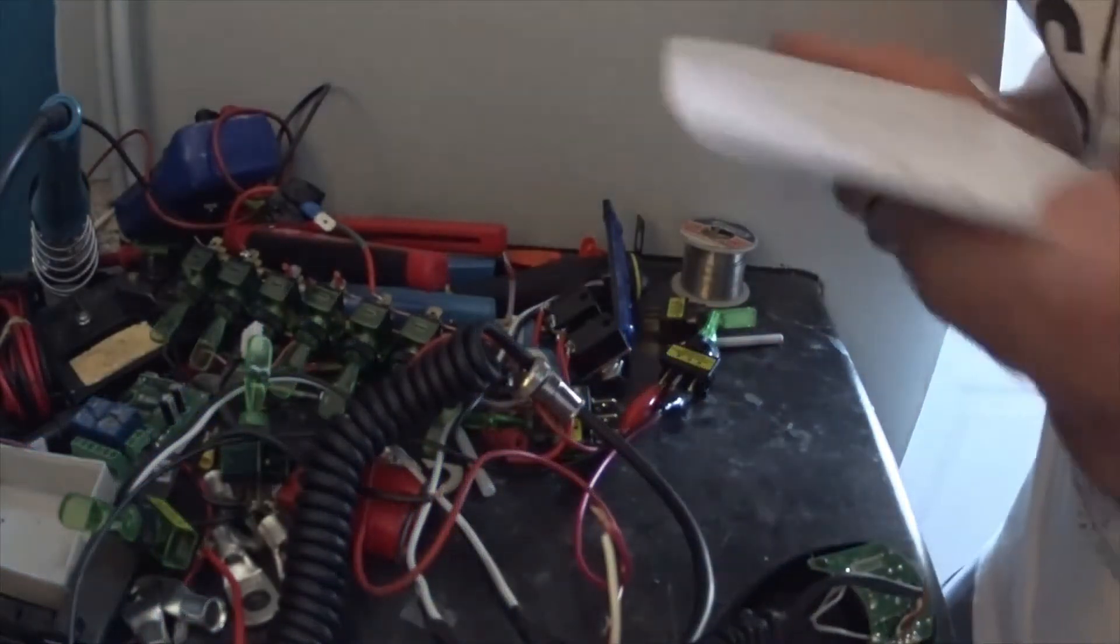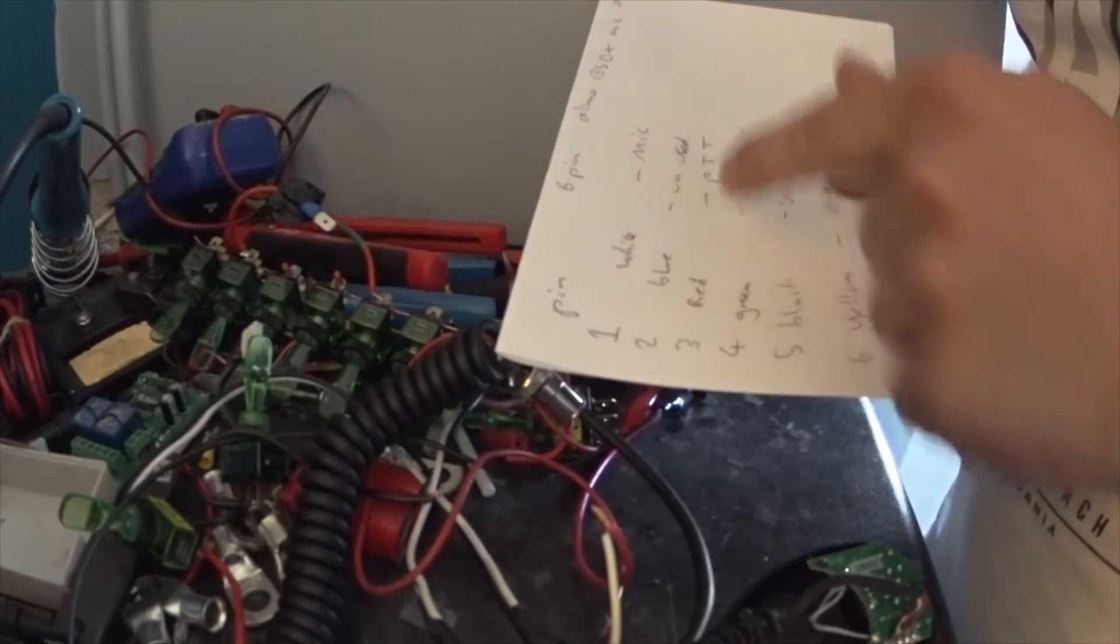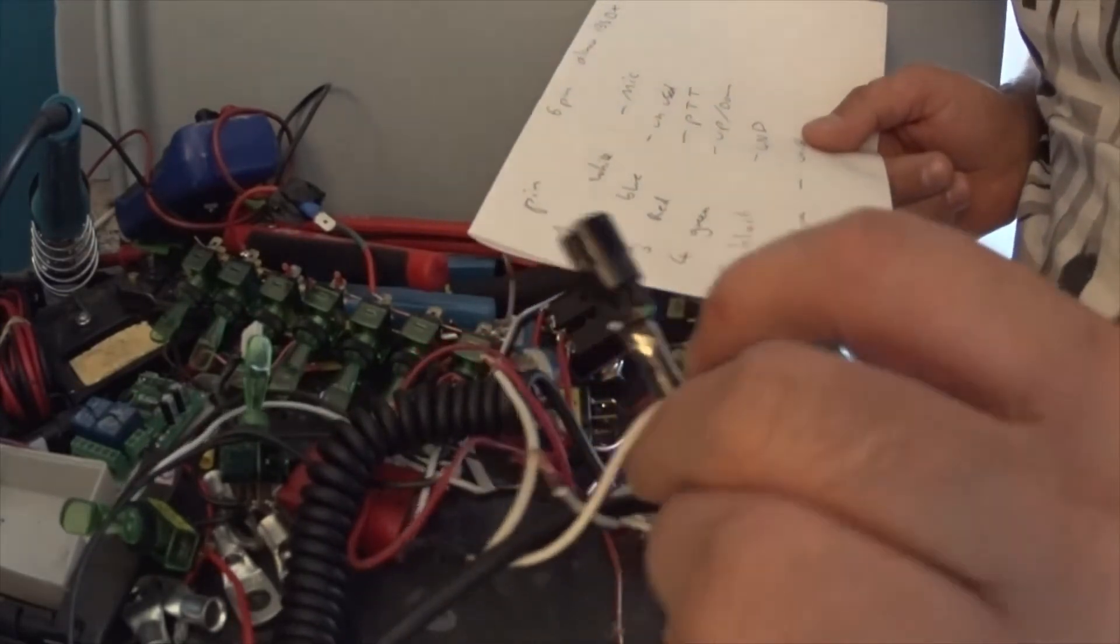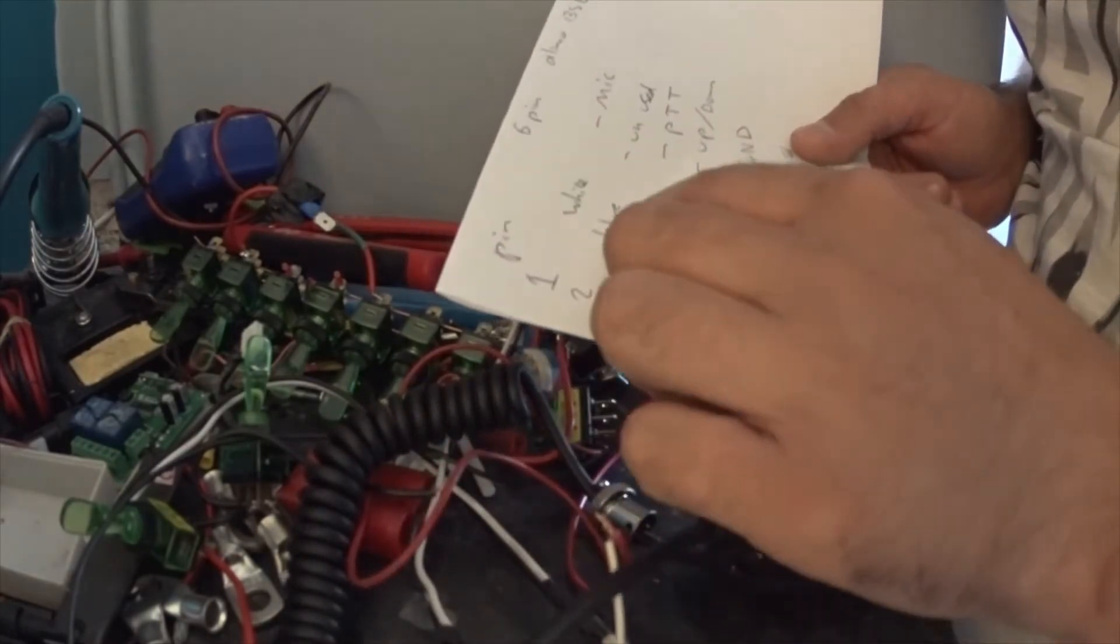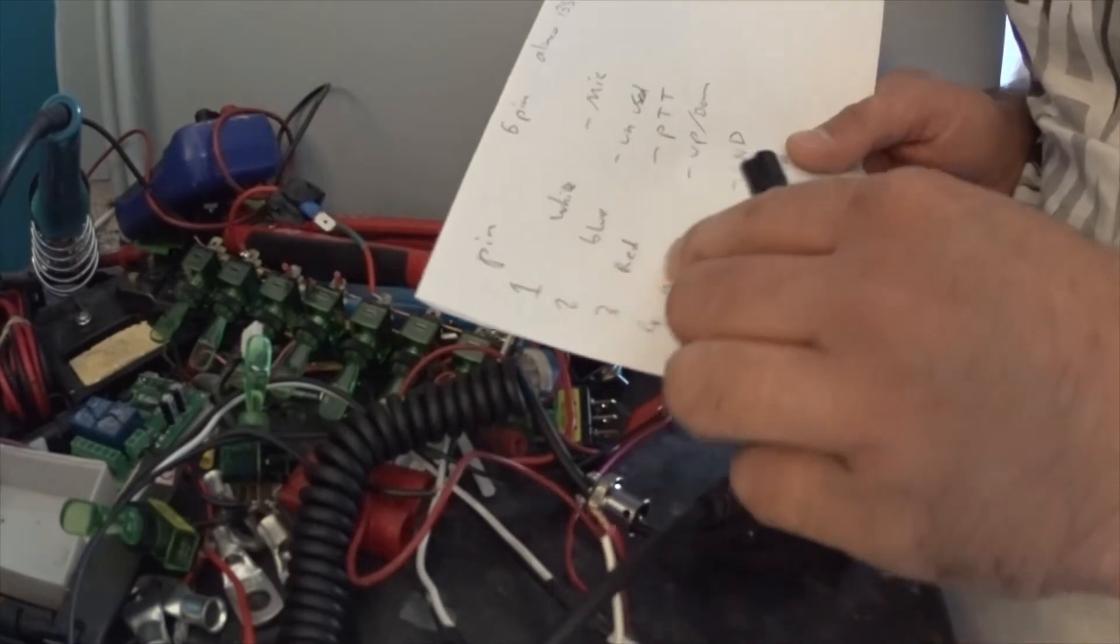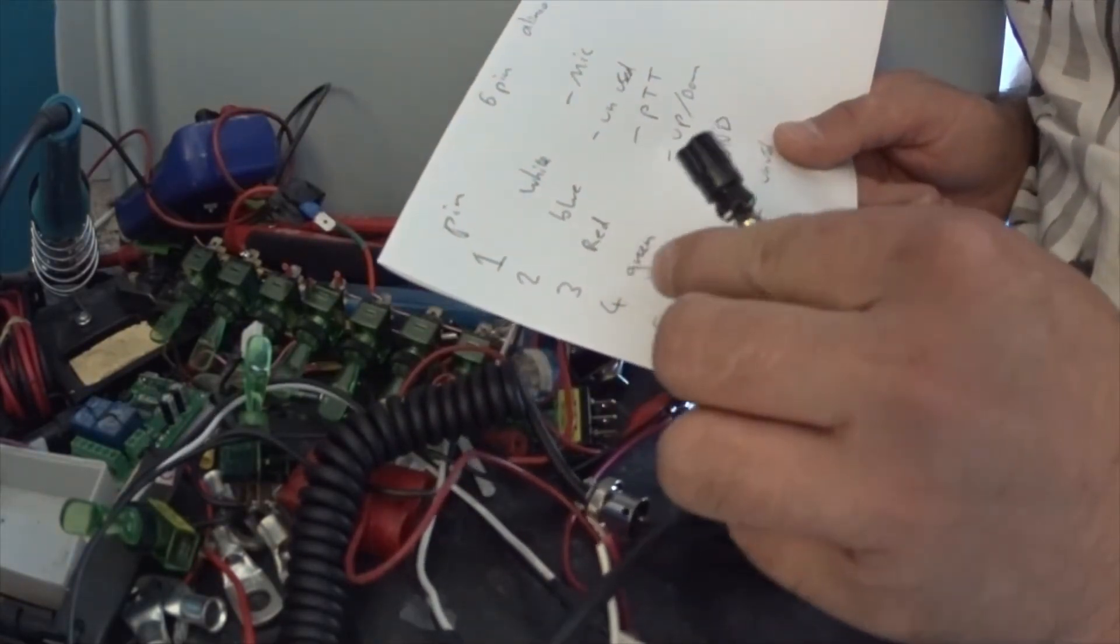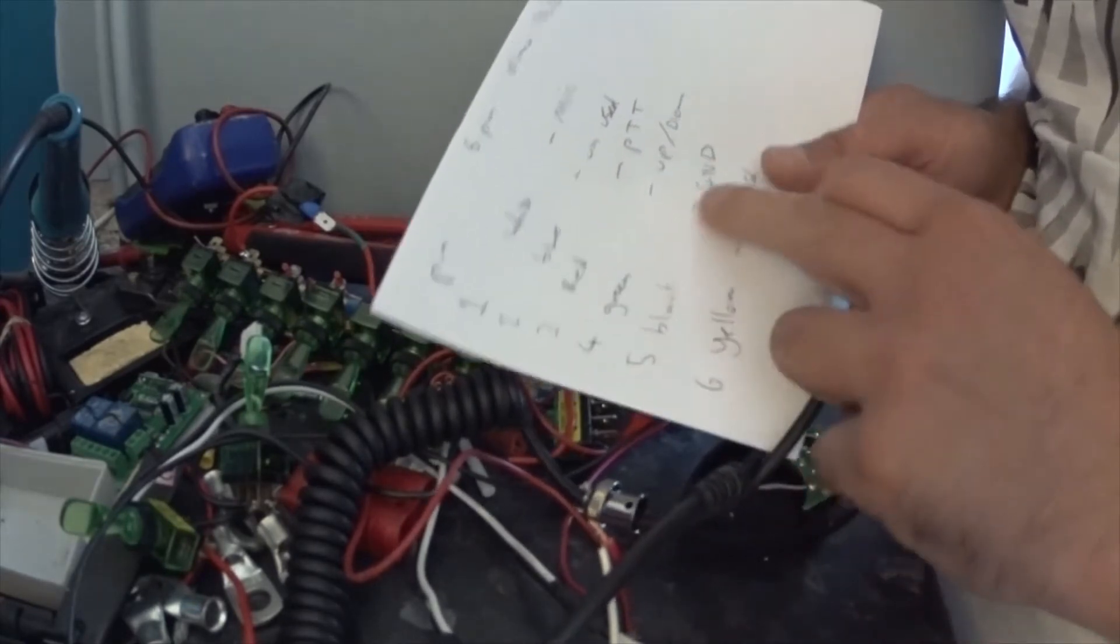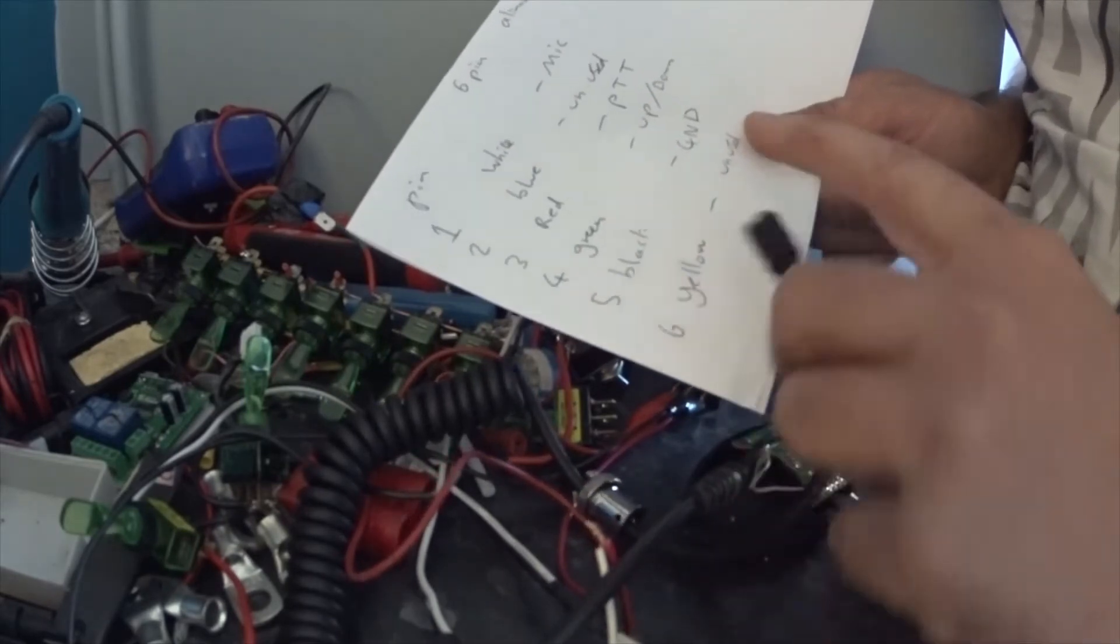And I'll show you the circuit board as well. So pin 1 is white and that's microphone. Pin 2, which is on the bottom somewhere, is unused but it's blue. Pin 3 red push to talk. Pin 4 which is green, that's your up and down channel selector. Pin 5 black is ground obviously. Pin 6 which is the middle one, that's yellow, that's unused.